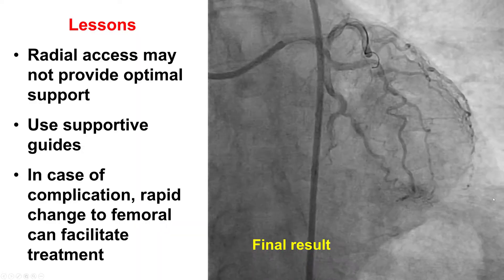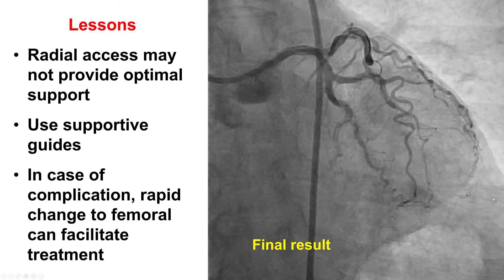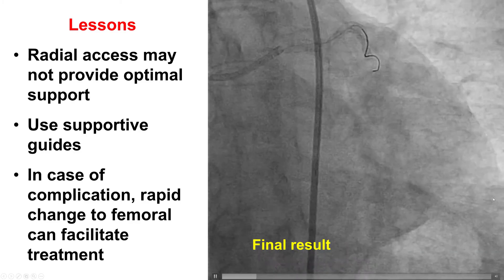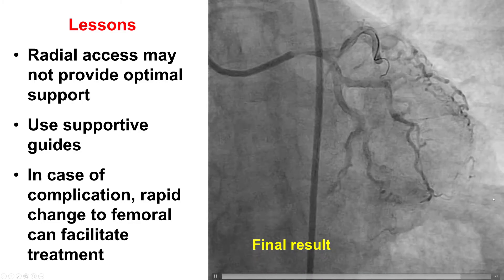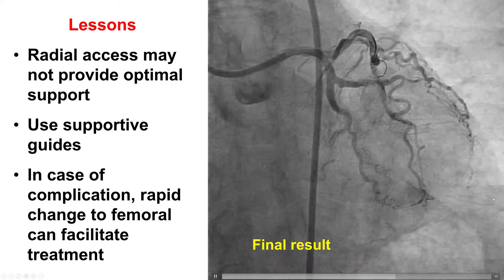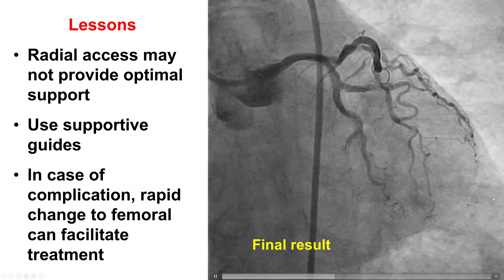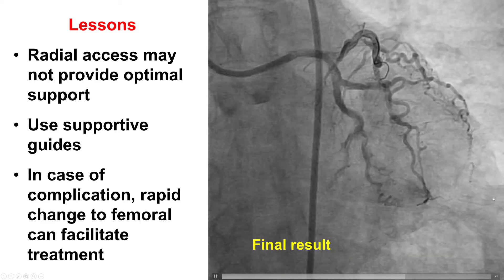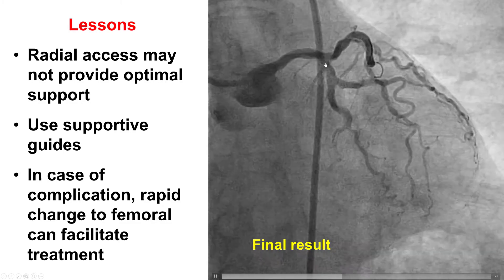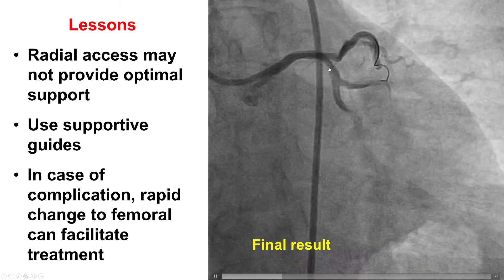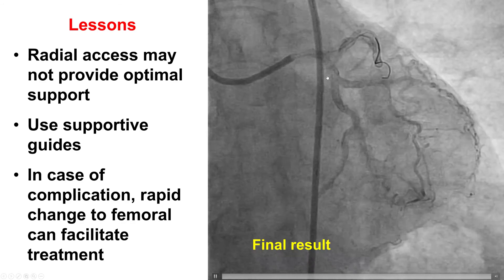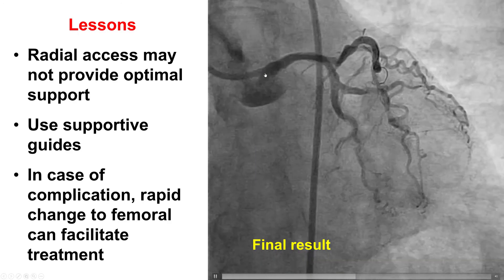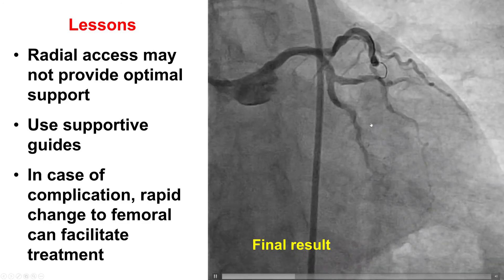There are several lessons from this case. The first is that for complex PCI, the radial axis — specifically using a less supportive guide catheter such as the ICARI left — might not provide enough support. Potentially, we may have had a better outcome if we had used an EBU or XB guide from the beginning and taken more time to engage with that. Nevertheless, if a complication happens using radial access and we have significant challenge delivering equipment, the solution may be to promptly switch to femoral access and use a large guide catheter that provides good support to allow troubleshooting of the complication.